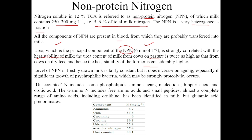The level of NPN in freshly drawn milk is fairly constant. However, it does increase on aging, especially if there is significant growth of psychrophilic bacteria, which may be strongly proteolytic. As these bacteria grow and proteolysis occurs, the level of NPN is found to increase.